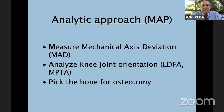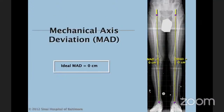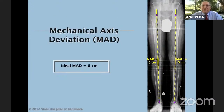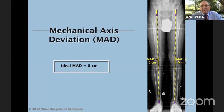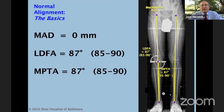Since we're orthopedic surgeons, not cooks making cookies, we shouldn't use the cookie-cutter approach. I propose this sequence — we call it MAP: M is measure the mechanical axis deviation; A is analyze the knee joint orientation — we measure the joint angles; and based on that, P is pick the bone for osteotomy. We apply the MAP test to every patient. Under ideal circumstances, if you draw a line from the hip to the ankle, that line should pass through the center of the knee, giving a mechanical axis deviation of zero.